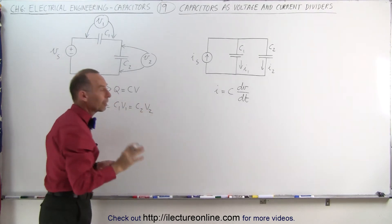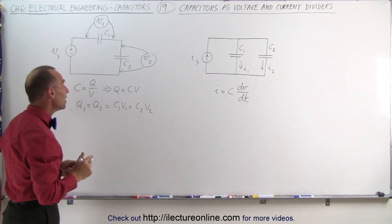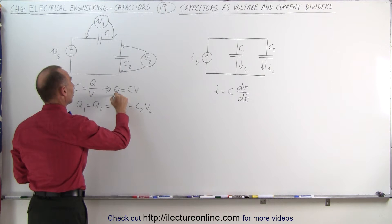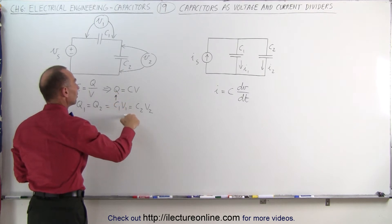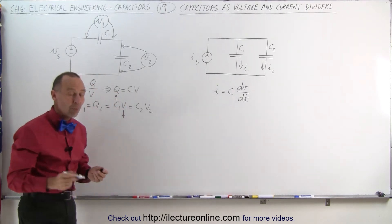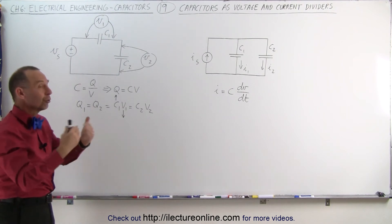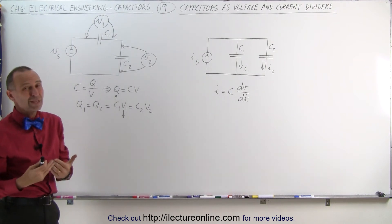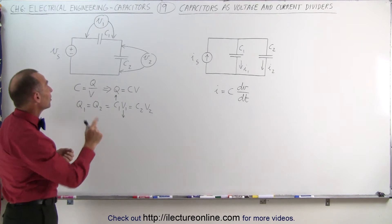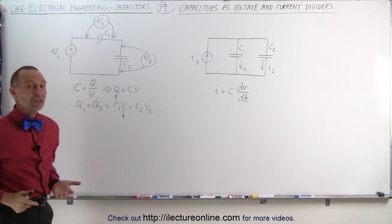The product of capacitance and voltage must be the same, which means if one capacitor is larger than the other, the voltage across that capacitor must be smaller. The larger the capacitor, the smaller the voltage — meaning the voltage across each capacitor is inversely proportional to the size of the capacitance.